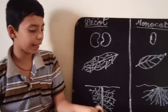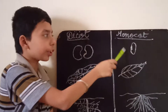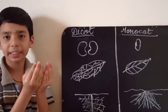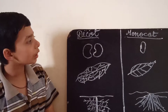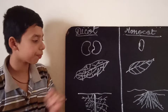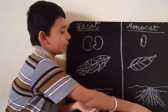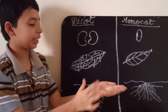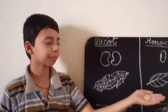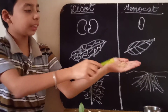Now I will explain about monocotyledon seeds. A monocotyledon seed cannot be divided into two halves because it has only a single cotyledon — only a single seed leaf. For example, this is rice. Rice is a monocotyledon seed. We cannot divide it into two halves.